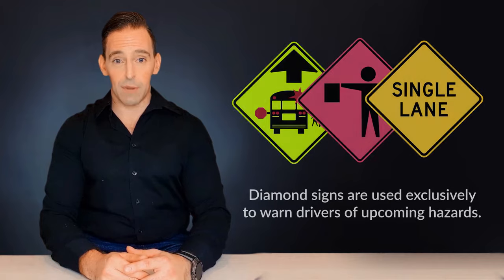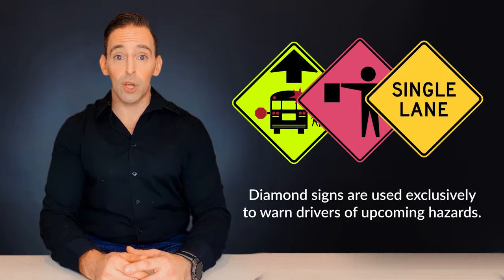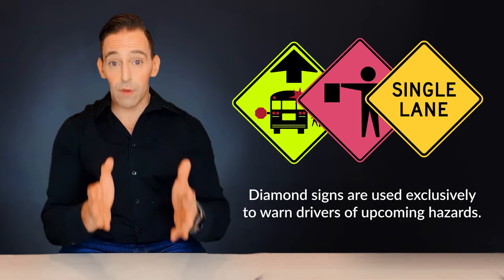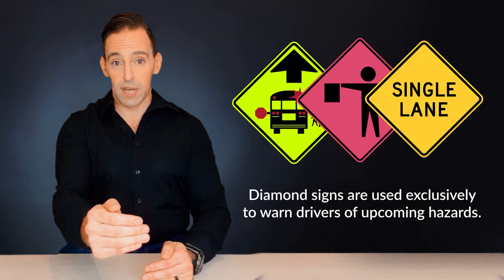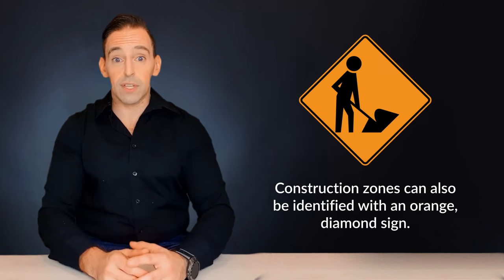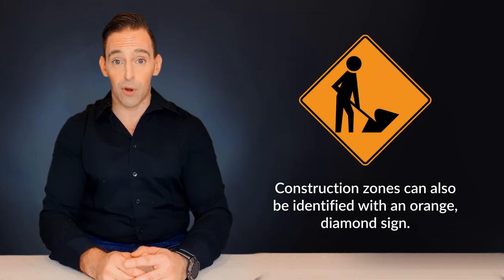First off, we have the diamond shape. Diamond signs are used exclusively to warn drivers of upcoming hazards. So if you see a diamond shaped sign, you know that you're looking at a warning sign. Construction zones can also be identified with an orange diamond sign.